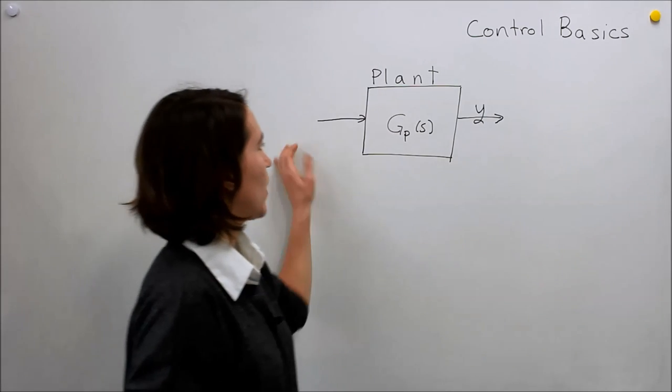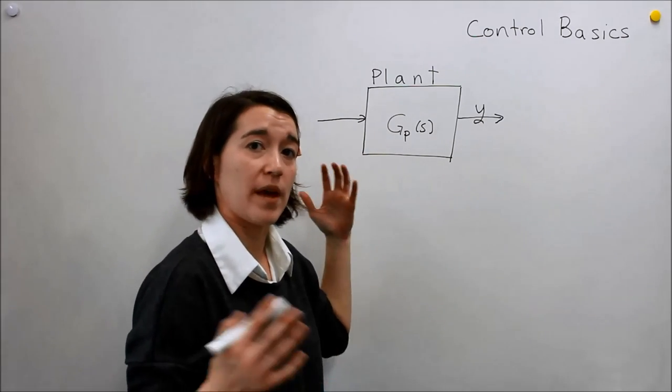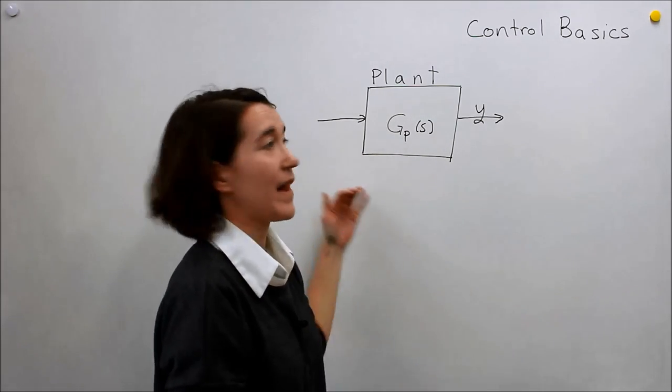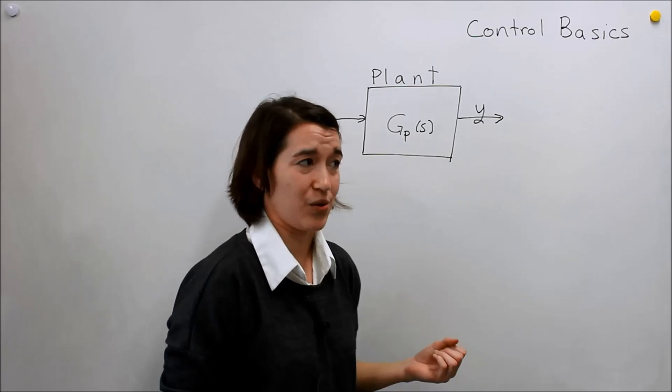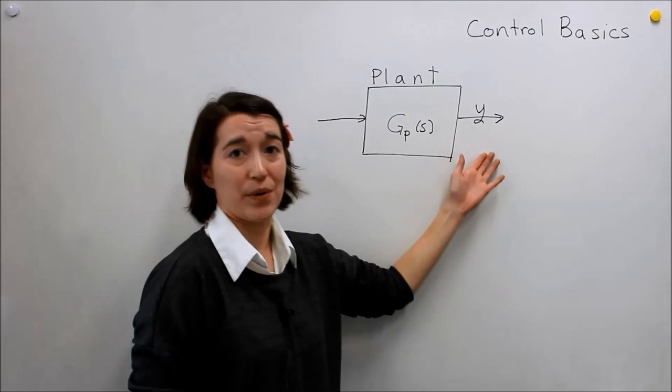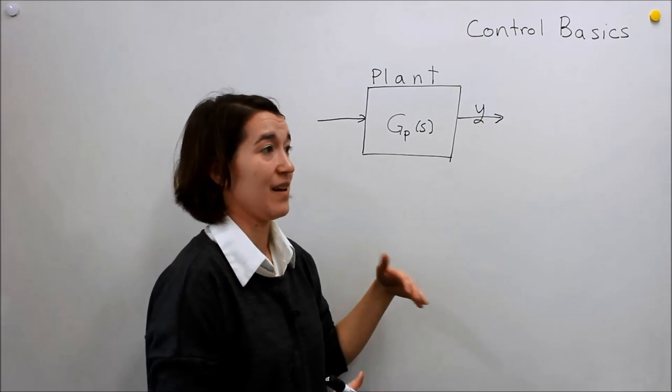So you have a system. You can input something into it to make it change and that affects the output. But what we really want to do in control is control this output to something. We want to make it, for example,